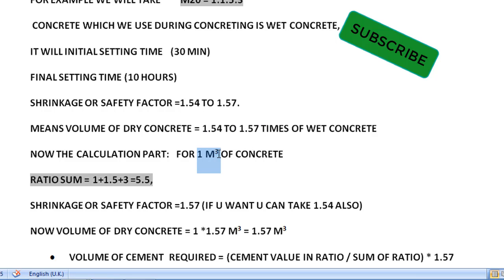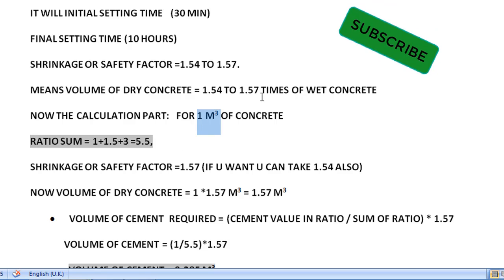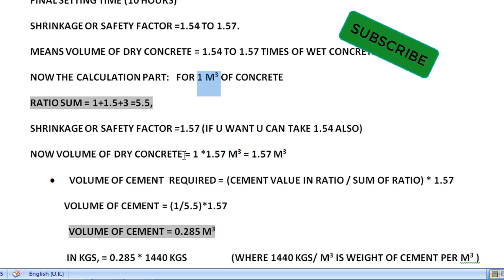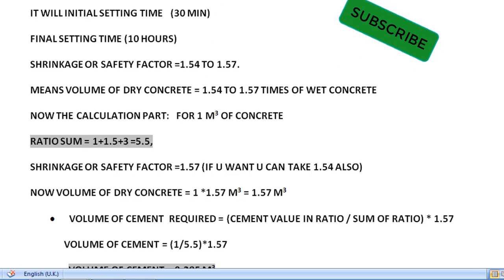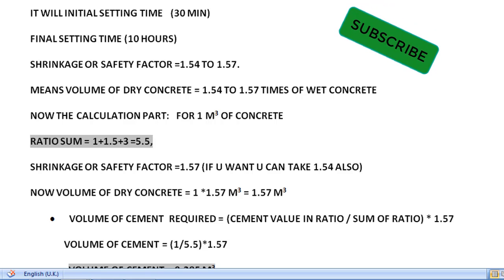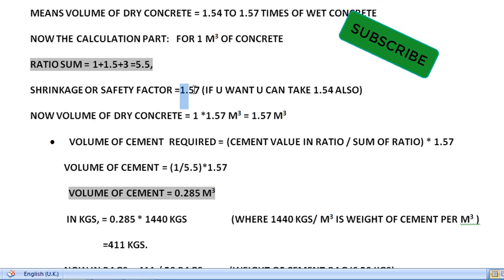The volume of dry concrete will be 1.54 to 1.57 times the wet concrete. Suppose you have one cubic meter of wet concrete — the volume of dry concrete will be 1 × 1.57 = 1.57 cubic meters. I am taking the shrinkage factor as 1.57 here. The ratio sum of M20 grade concrete is 1 + 1.5 + 3 = 5.5, which we call the ratio sum.